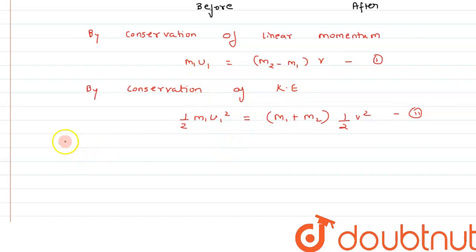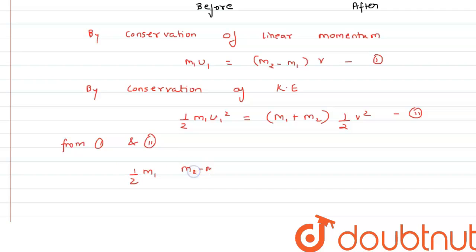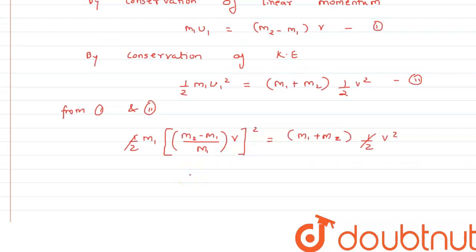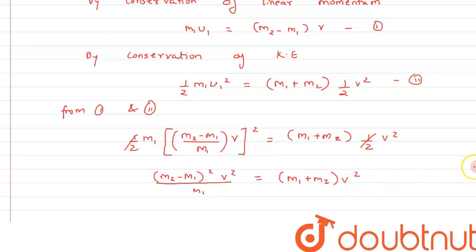From equations one and two, the value of u1 can be written as (m2 - m1)/m1 times v. Substituting into equation two, the halves cancel from both sides, m1 also cancels, and we are left with (m2 - m1)² * v² divided by m1 equals (m1 + m2) * v².